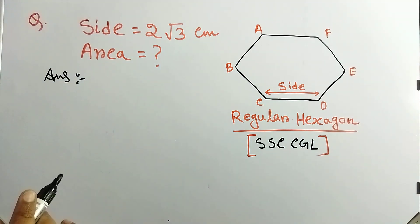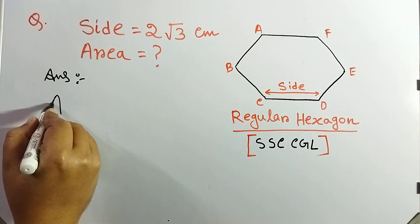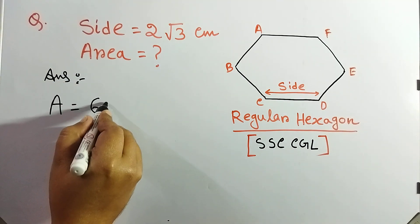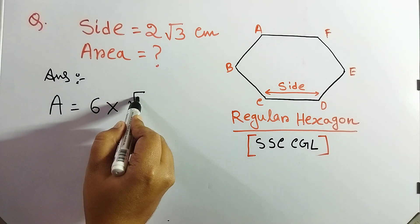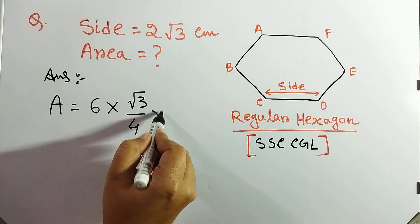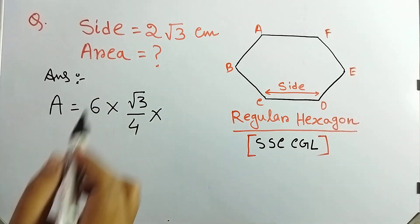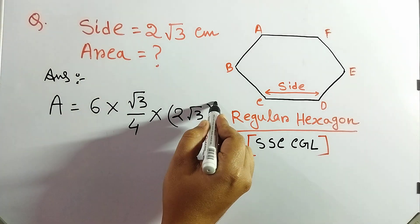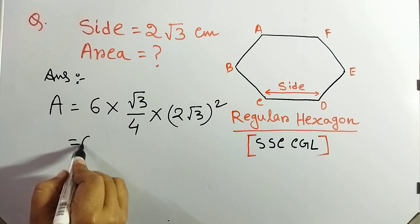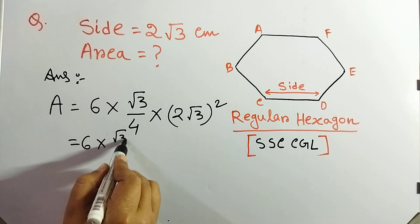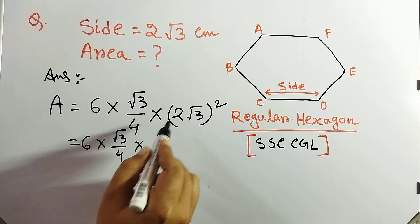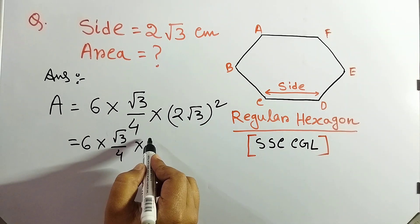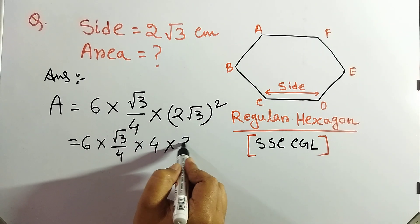So what is the formula for area? Area formula is 6 into root 3 by 4 into side square. So what is the value of side? 2 root 3 square. So 6 into root 3 by 4, 2 square that means 4, root 3 square that is 3.